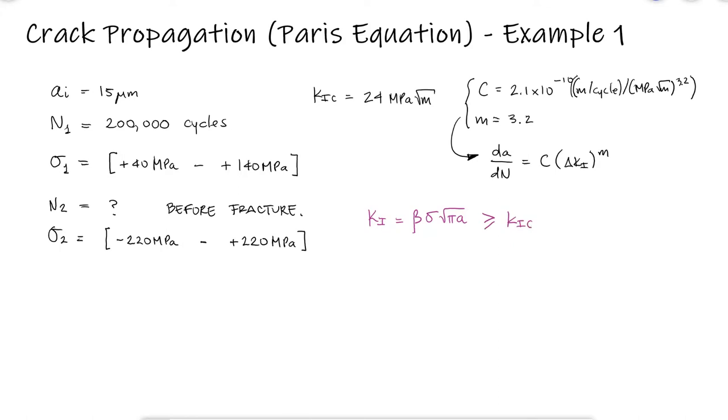A reasonable assumption for the modification factor beta is that its value is 1, since the very small initial crack length will almost always result in a small value of beta, regardless of the load configuration and therefore the chart we're looking at. The final crack length, right before it fails, would be equal to 3.79 mm.